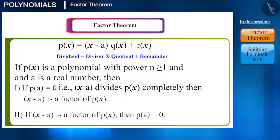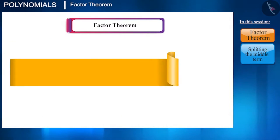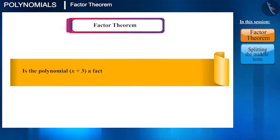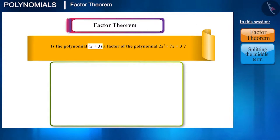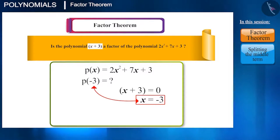Let's see an example related to this theorem. Check whether (x + 3) is a factor of the polynomial 2x² + 7x + 3 or not. According to the Factor Theorem, if (x + 3) is a factor of the polynomial 2x² + 7x + 3, then p(-3) should be 0, where -3 is obtained by equating x + 3 to 0.